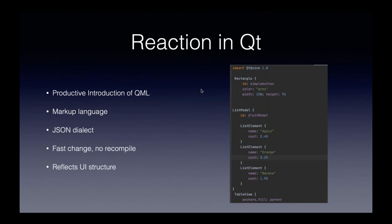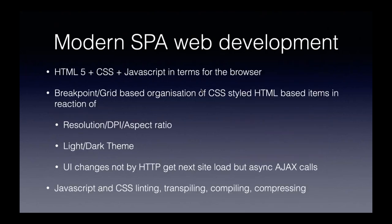Even Qt reacted to this — since Qt 5 there are things like QML, which is just a JavaScript dialect to mark up your GUI, similar to HTML. It better reflects the actual structure of your GUI and decouples the GUI logic from the basic business logic behind it, as well as from your GUI design. This is also reflected in modern web development.